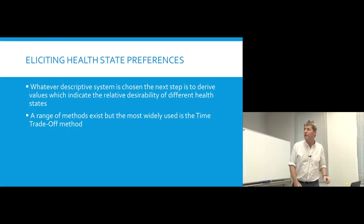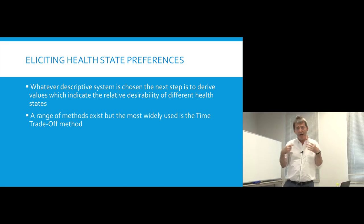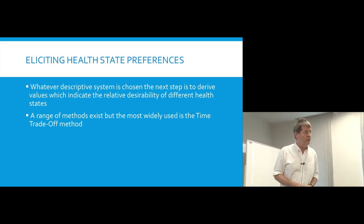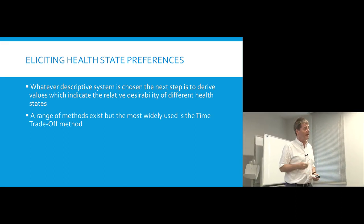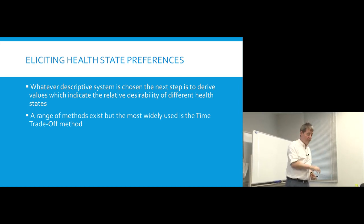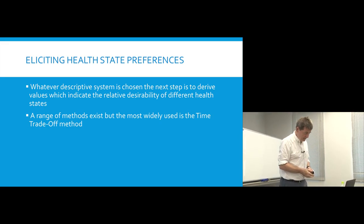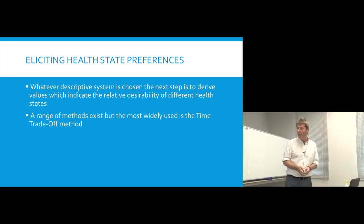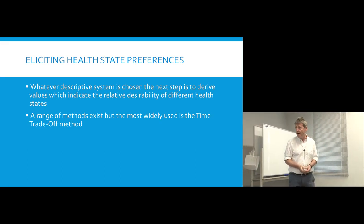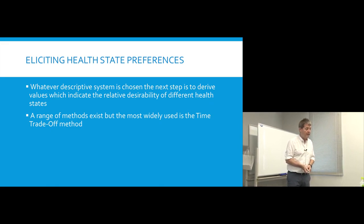Eliciting health state preferences. Whatever health state descriptive system we use, the next step is to get some scores, some numbers attaching to the different health states. There are a range of methods available, but far and away the most widely used is something called the time trade-off method.